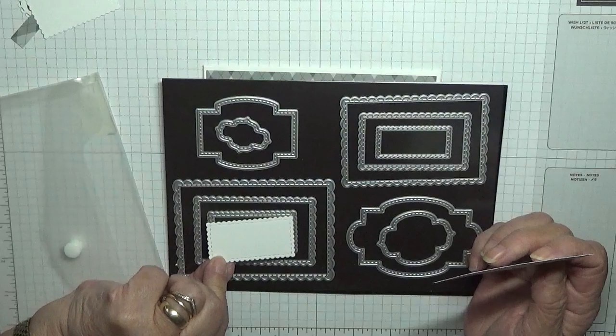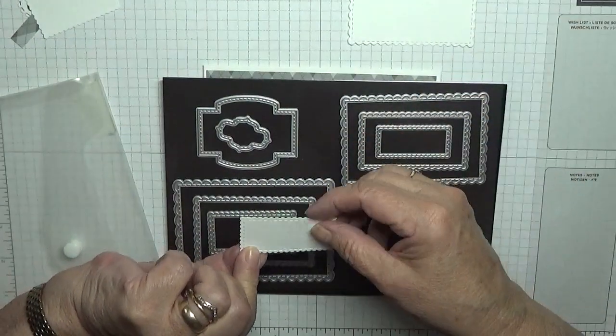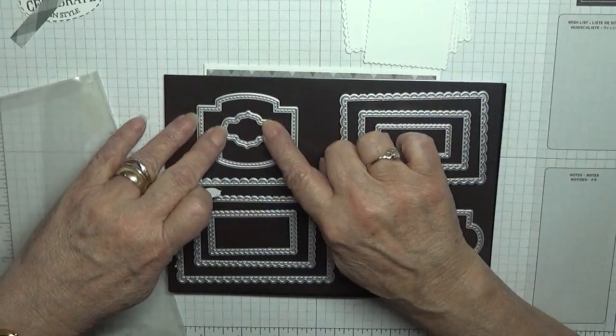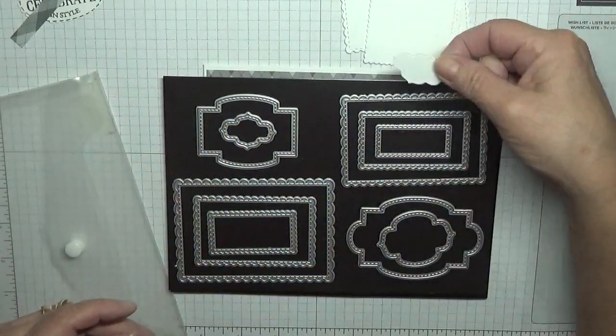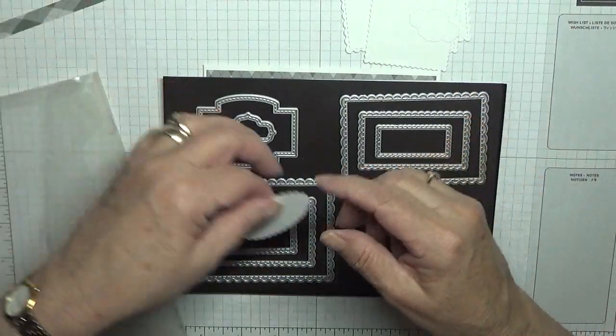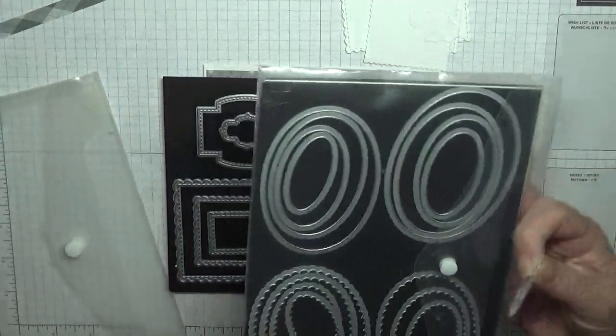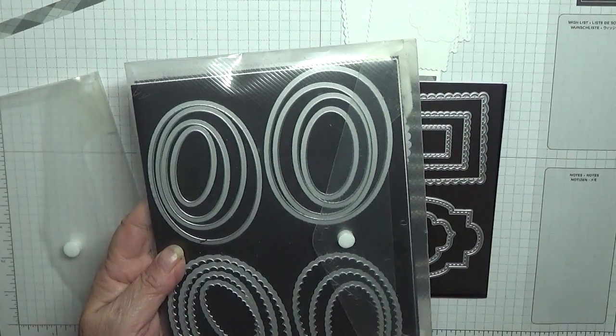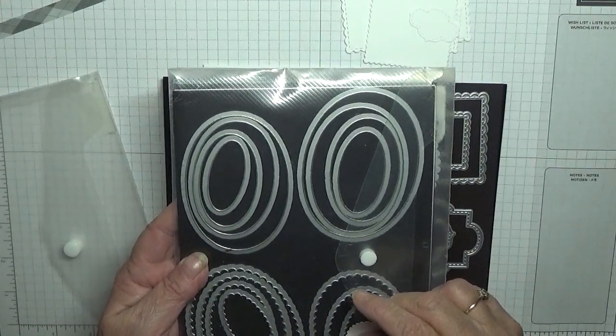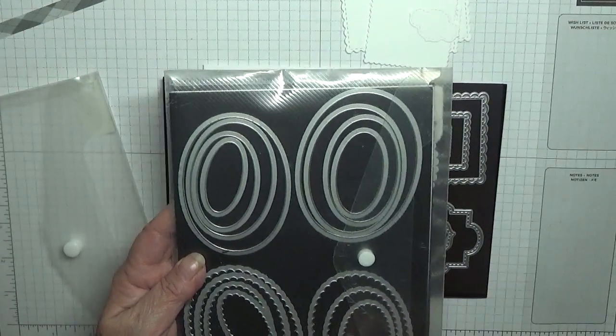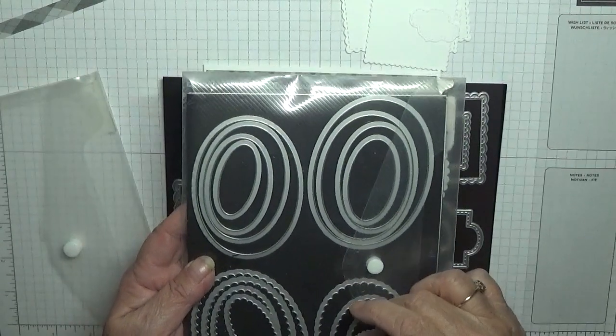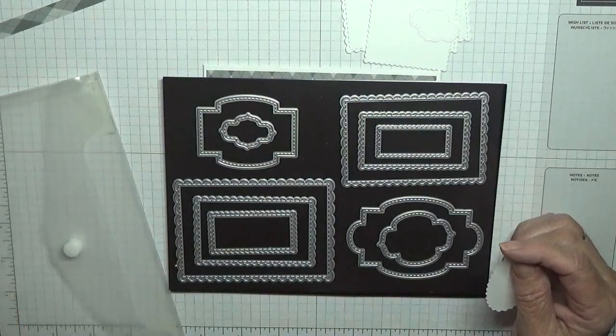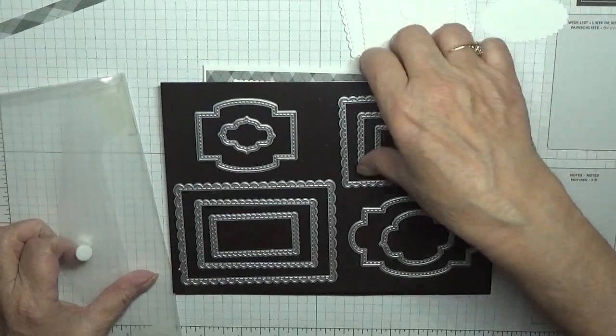So these are the dies I've used, and today I'm using number four in the rectangles. I'm also using number two in the rectangles. I've also got a scallop two inch square, I've also used this little one here, and I've used an oval scalloped oval from the ovals which is number two or it could be three.